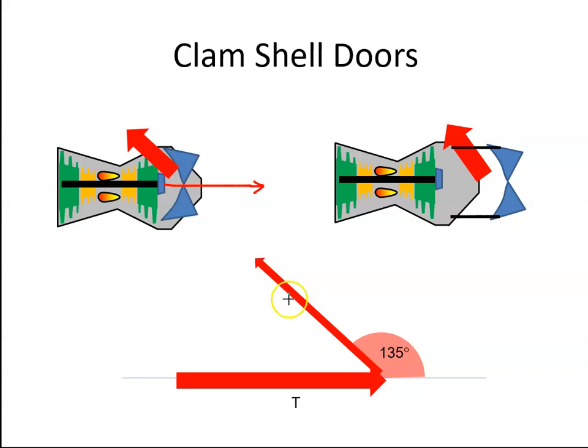It's now deflected by 135 degrees. When it's deflected by 135 degrees, that means this angle in here is 45 degrees. If we complete our right angle triangle, we see that this value here is T times the cos of 45 degrees.